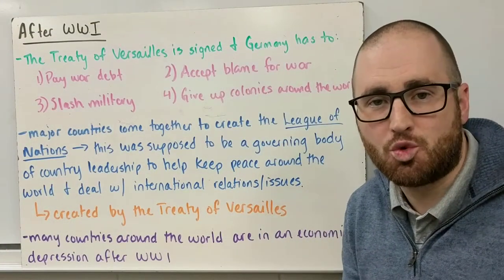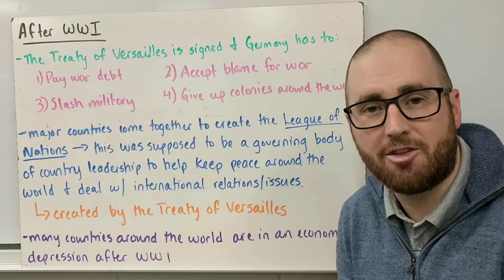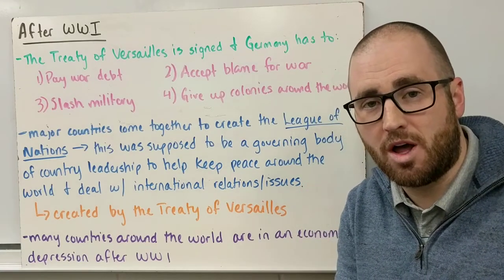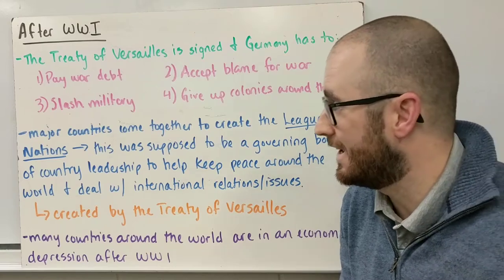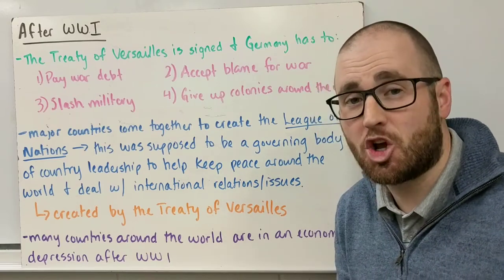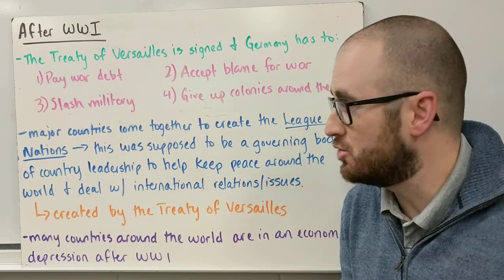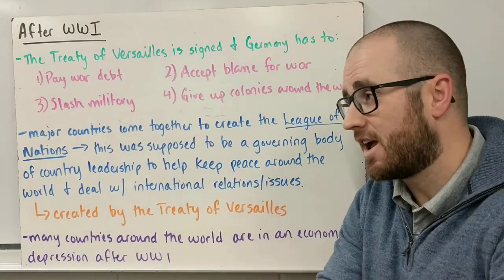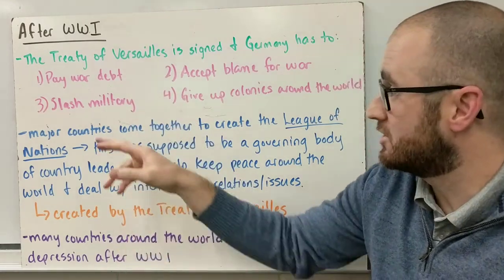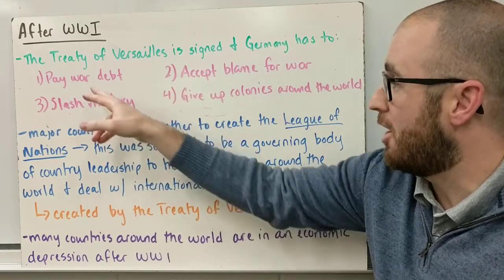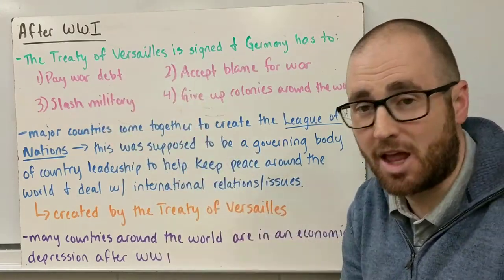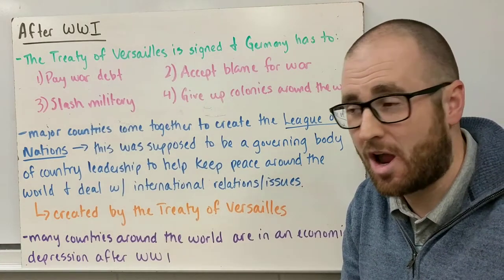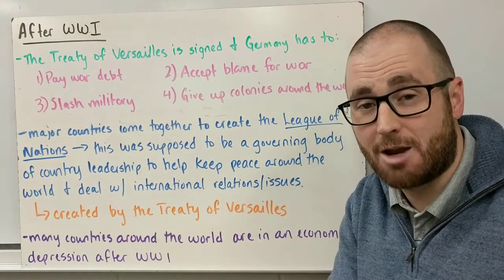This video is called the interwar years and the rise of Hitler. The interwar years are the period of time between World War I and World War II — roughly about 20 years. The Treaty of Versailles, signed after World War I, forced Germany to do a bunch of things: paying the war debt, accepting blame for the war, slashing their military, and getting rid of their colonies around the world.